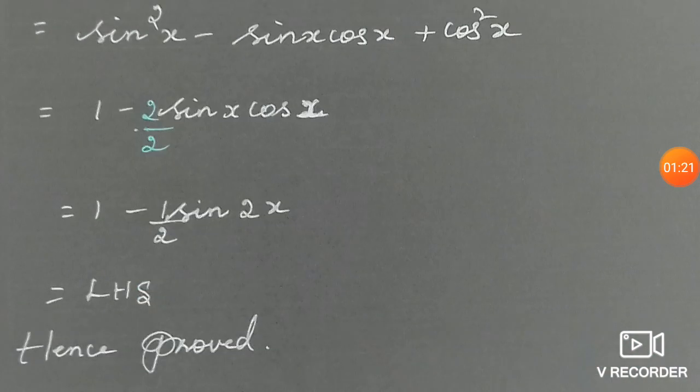So, let us multiply and divide by 2 in both numerator and denominator. So, you have 2 sin x cos x. Other way sin 2x is double angle identity. Denominator 2 is written.